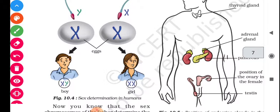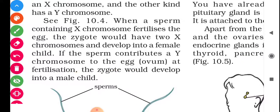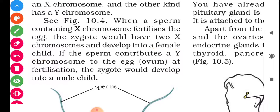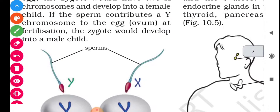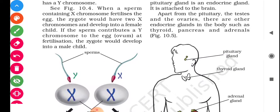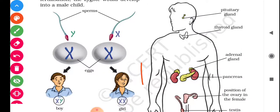As shown in figure 10.4: when a sperm containing an X chromosome fertilizes the egg, the zygote would have two X chromosomes and develop into a female child. So if the sperm contributes an X chromosome, the resulting zygote is XX, which gives birth to a baby girl — because the XX pair is present in females.